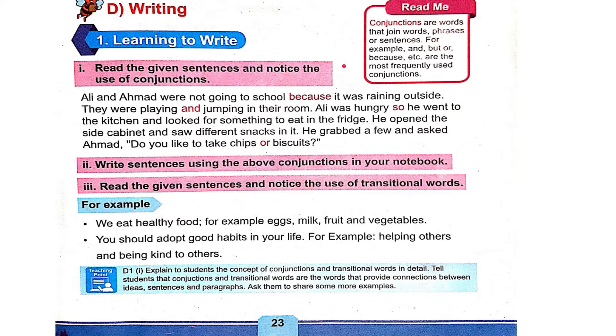First of all, we are going to know what conjunctions are. Conjunctions are words that join words, phrases, or sentences. For example: and, but, or, because, etc. are the most frequently used conjunctions.